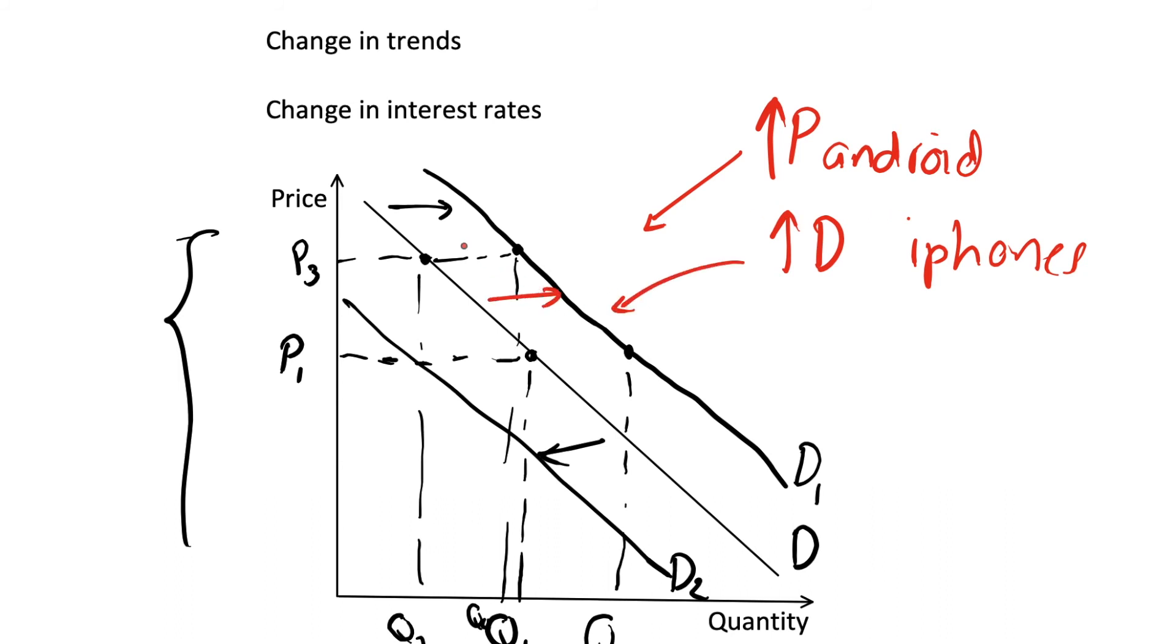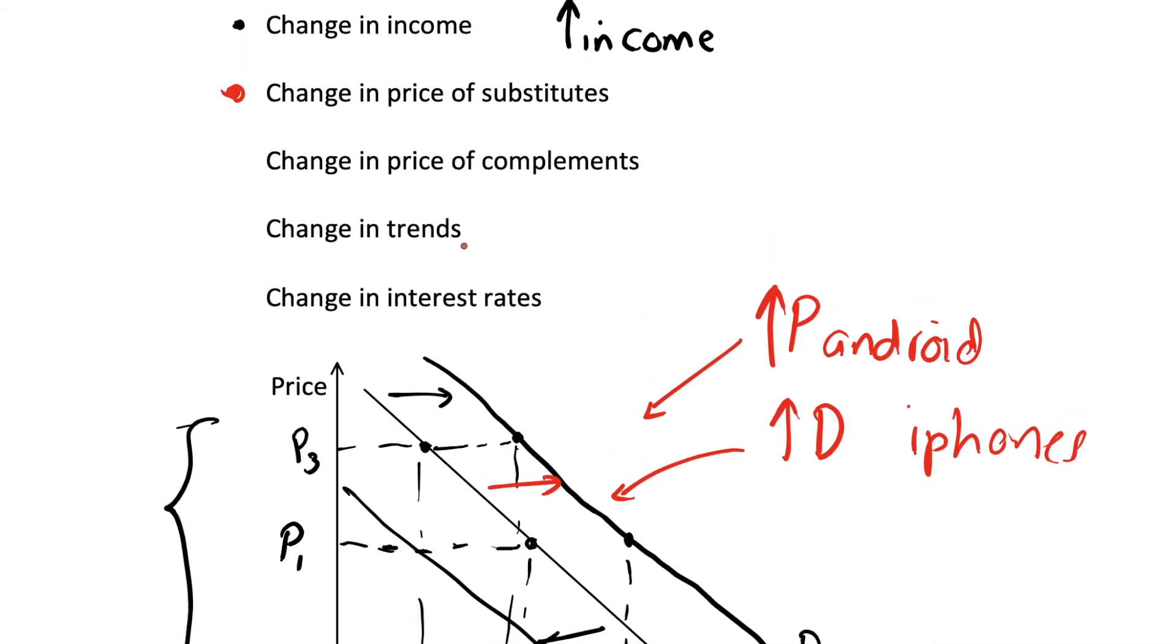And we're going to have this shift to the right of demand because more people are going to be demanding iPhones at every price level. And we can also talk about changing the price of complements. So if we're again thinking about iPhones, what if the price of an iPhone charger has fallen or what if the price of iPads have fallen and we tend to use iPhones and iPads together, then this can cause a shift in our demand curve to the right.